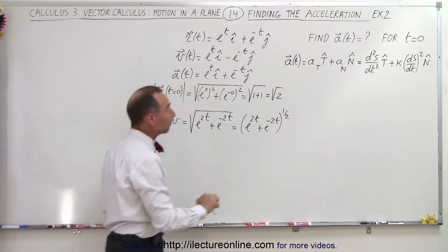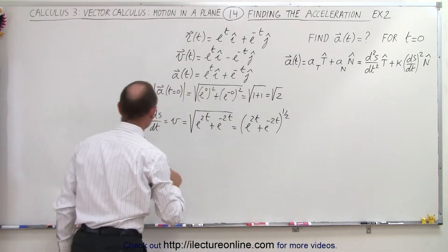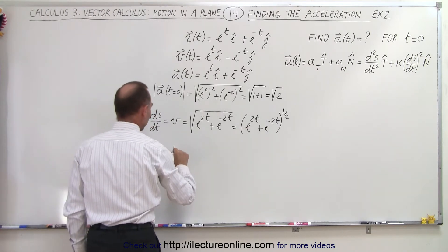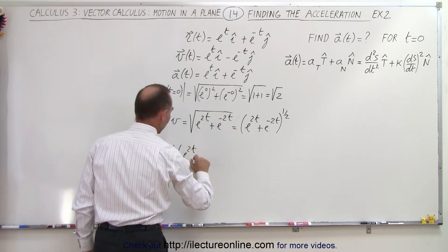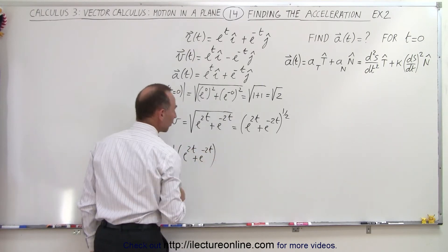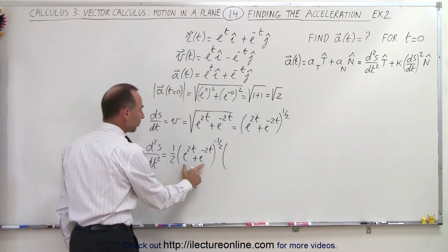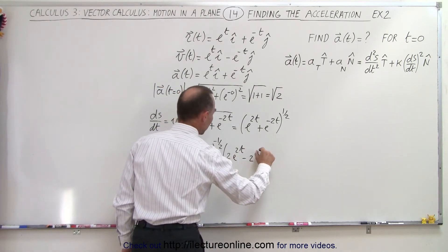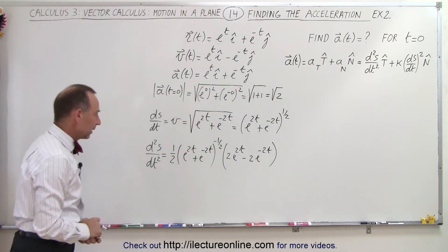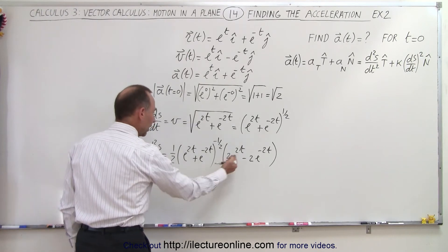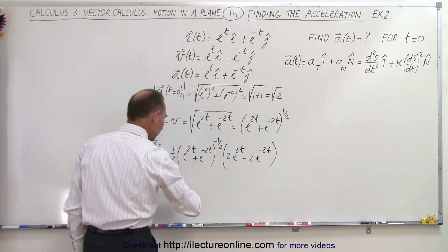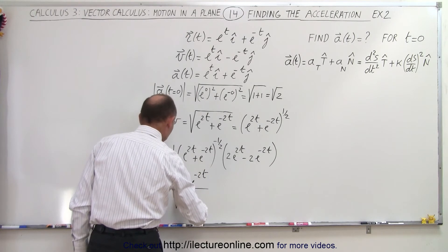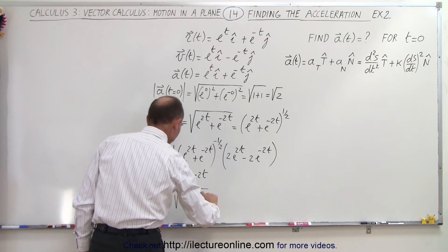The reason I wrote it like that is because now we're going to have to find the second derivative of that. So d²s/dt² is the second derivative of that, which is one half times e to the two t plus e to the minus two t to the minus one half power, multiplied times the derivative of what's inside — that would be two e to the two t minus two e to the minus two t. And then I can simplify that: factoring out a two, in the numerator we end up with e to the two t minus e to the minus two t, all divided by the square root of e to the two t plus e to the minus two t.